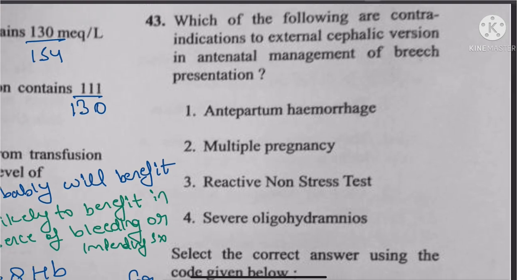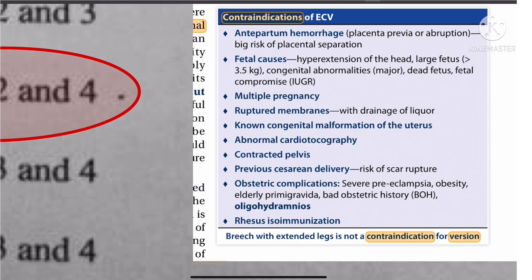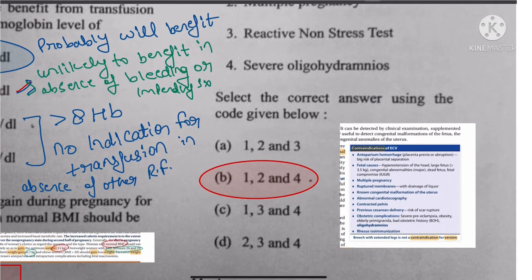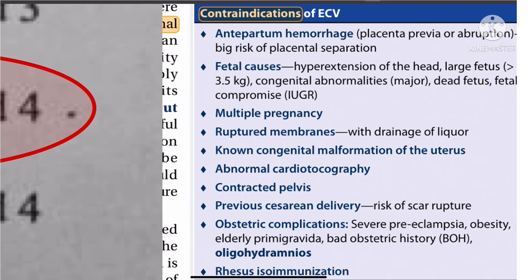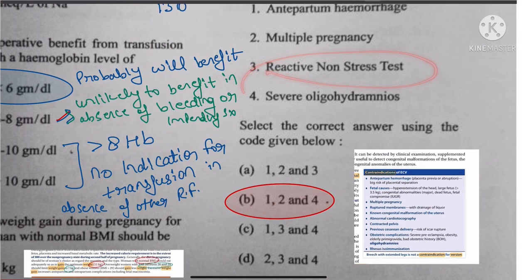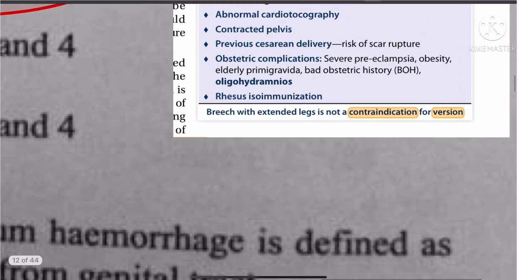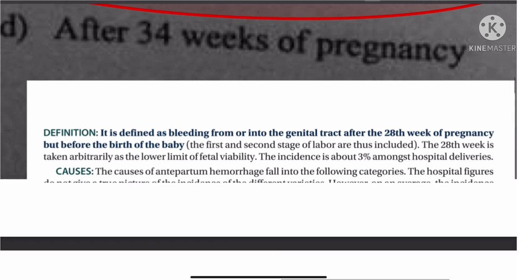Question 43: Contraindications of external cephalic version (ECV) include antepartum hemorrhage, severe oligohydramnios, and multiple pregnancies. The reactive non-stress test is not a contraindication. Antepartum hemorrhage is defined after the 28th week of pregnancy.